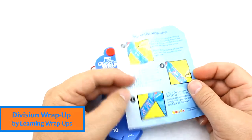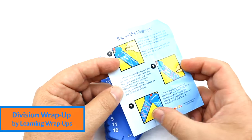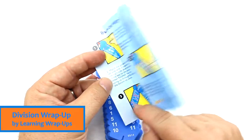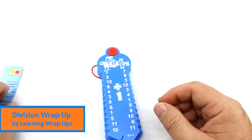What this also comes with is a little key that tells you how to use it, telling you how to wrap the string around it and then self-correct on the back with the grooves that are in place that tell you whether you did it correctly or not.